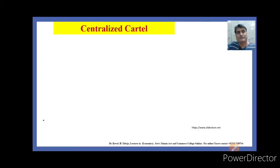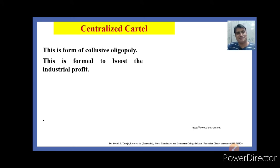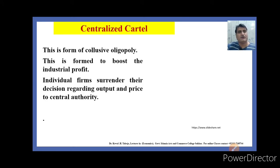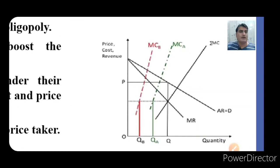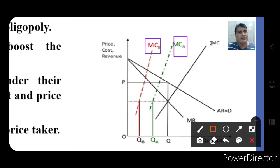What is Centralized Cartel or Perfect Cartel? This is a form of Collusive Oligopoly to boost industrial profit under which individual firms surrender their decision regarding output and price to central authority. The individual firm is just a price taker under the centralized cartel. Suppose there are two firms and their costs are MCA and MCB. MCA is the marginal cost of firm one and MCB is the marginal cost of the other firm.